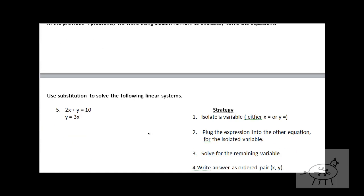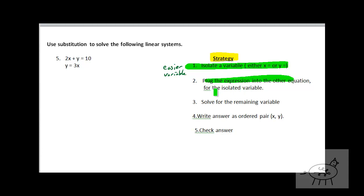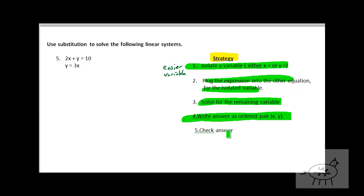So that's all substitution. It gets a little trickier, but not that much. Here's our strategy. First, you're going to isolate a variable — that means you solve for one of the variables first, either x or y, whichever one's easier. Once you solve for that, you're going to plug that expression into the other equation. And then the third step is you solve for the remaining variable, write it as an ordered pair, and check your answer.